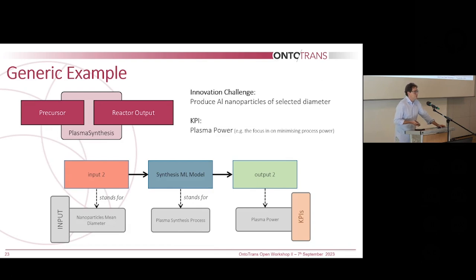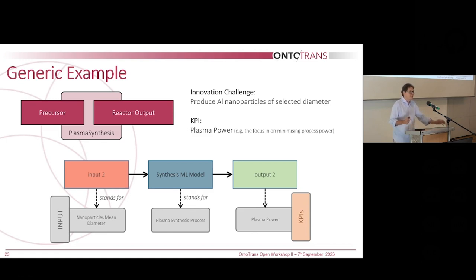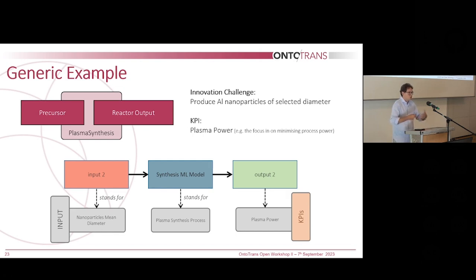An important step is how to deal with the knowledge generator — workflows that help us to design and improve this process. For example, I have a model that can model nanoparticle synthesis. I can represent a workflow where one input is nanoparticle mean diameter and the output is plasma power — a reverse approach to models: find the optimal plasma power to obtain a particular mean diameter. Or the opposite use case: predict the nanoparticle diameter given a particular power. These workflows used to predict innovation case quantities are represented in the ontology.